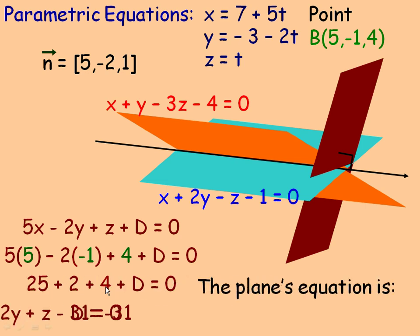And so the plane's equation is, substituting negative 31 in place of D, 5x minus 2y plus z minus 31 equals 0. So that is our plane.